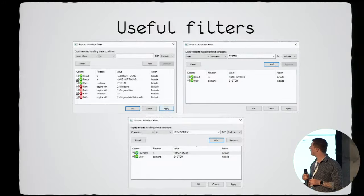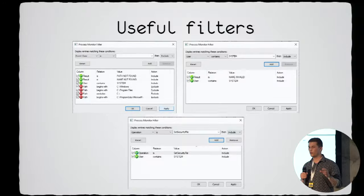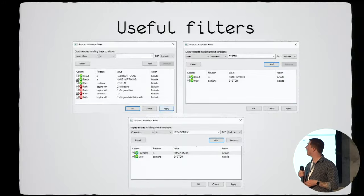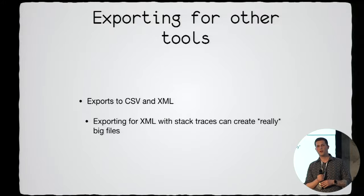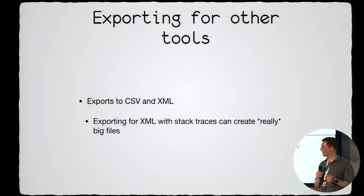When you put two 'result is' filters with the same column and relation, that means OR. So result is 'path not found' OR result is 'name not found'. But the user contains 'system' filter is exclusive — so it's: (result is path not found OR name not found) AND user contains system. You can't really customize the AND/OR filtering beyond this, so it's good to remember how it works. You can export to CSV or XML — importing into Excel works well. For XML exports, don't include stack traces unless you really need them: a 300MB procmon log file will turn into an 11GB XML with stack traces.